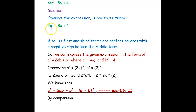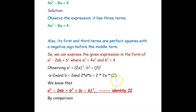Where a squared is 4x squared and b squared is 4. If a squared is 4x squared then a will be 2x, and if b squared is 4 then b will be 2. So 2ab will be 2 into 2x into 2. We know that a squared minus 2ab plus b squared is (a − b) whole squared — we are taking it as Identity 2.